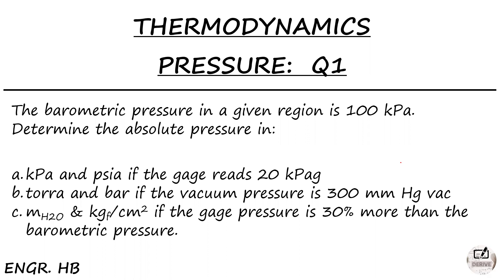So let us start and I hope we can learn and refresh. The first question for the pressure topic: the barometric pressure in a given region is 100 kPa. Determine the absolute pressure in Letter A — kPa and PSI absolute — if the gauge reads 20 kPa gauge. PSI A means absolute PSI. Read the unit first: if it is A, that's absolute; if it is G, that's gauge.